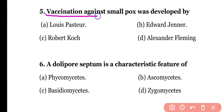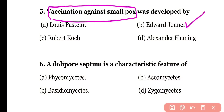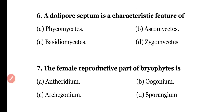Question number five: vaccination against smallpox was developed by (a) Louis Pasteur, (b) Edward Jenner, (c) Robert Koch, or (d) Alexander Fleming. The correct answer is option B — Edward Jenner developed the vaccination against smallpox for the first time.